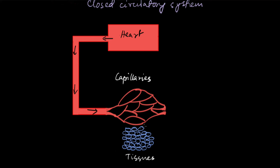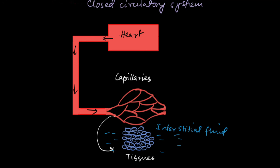The capillaries supply blood to all the tissues of the body. Since blood does not leave the vessels even in the capillaries, the capillaries go very close to the tissues and exchange materials with them. The tissues are surrounded by a fluid called the interstitial fluid. Between the capillaries and this interstitial fluid, there is an exchange: capillaries provide oxygen and nutrients to the interstitial fluid, and the tissues give back waste products and carbon dioxide.